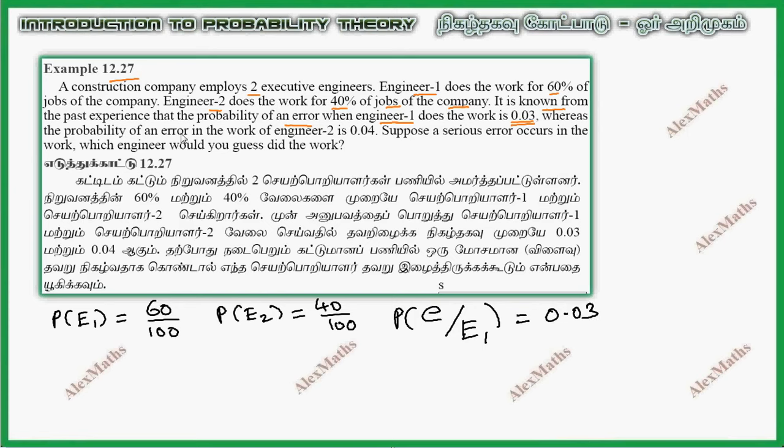Whereas the probability of an error in the work of Engineer 2 is 0.04. P of error given Engineer 2 equals 0.04.